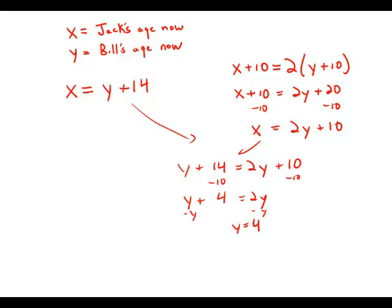If y equals 4, x equals 18. And this makes sense because if Jack is 18 now and Bill is 4 now, well, in 10 years, when Jack is 28 and Bill is 14, Jack will be twice as old.